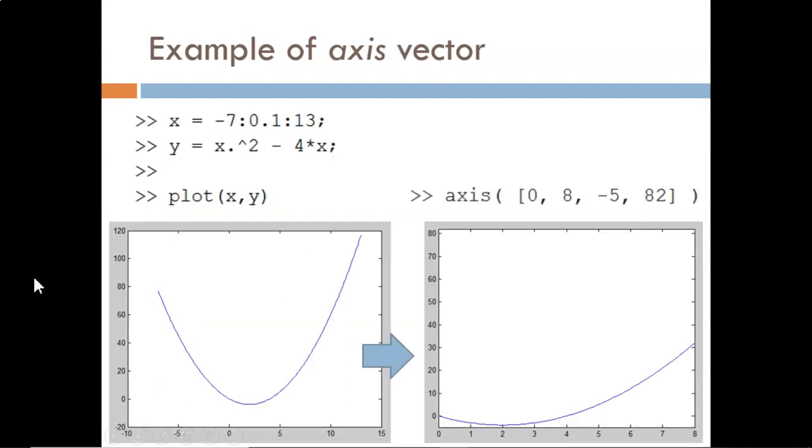Here is an example of setting the full axis limits in one command. First, we create the original plot with the three commands shown here. Then we pass in a four-element vector into the axis function. Now we can see the x-axis goes from 0 to 8, and the y-axis from negative 5 to 82.